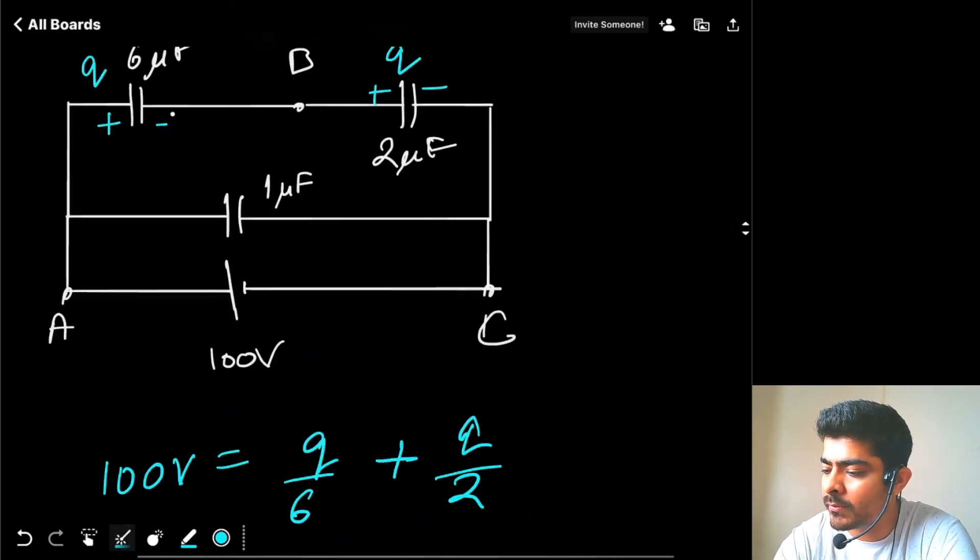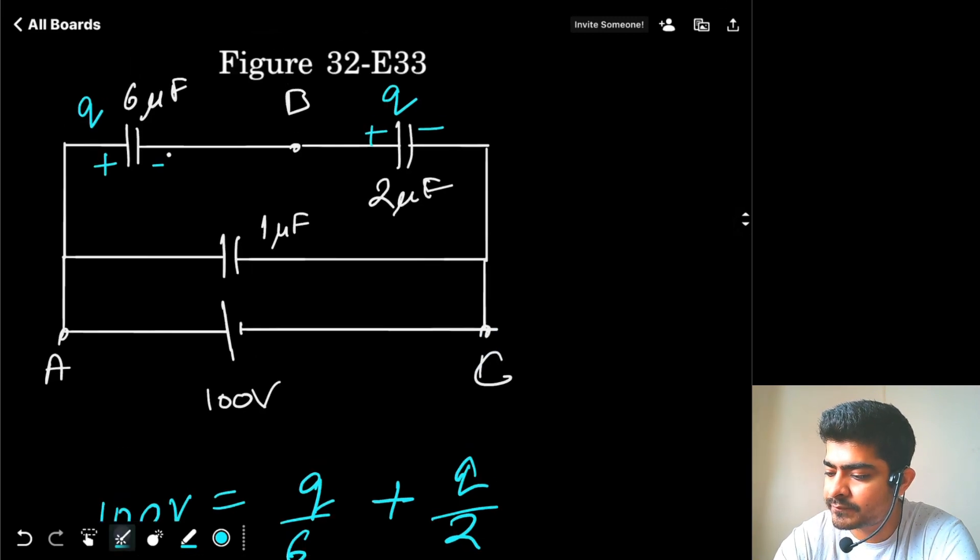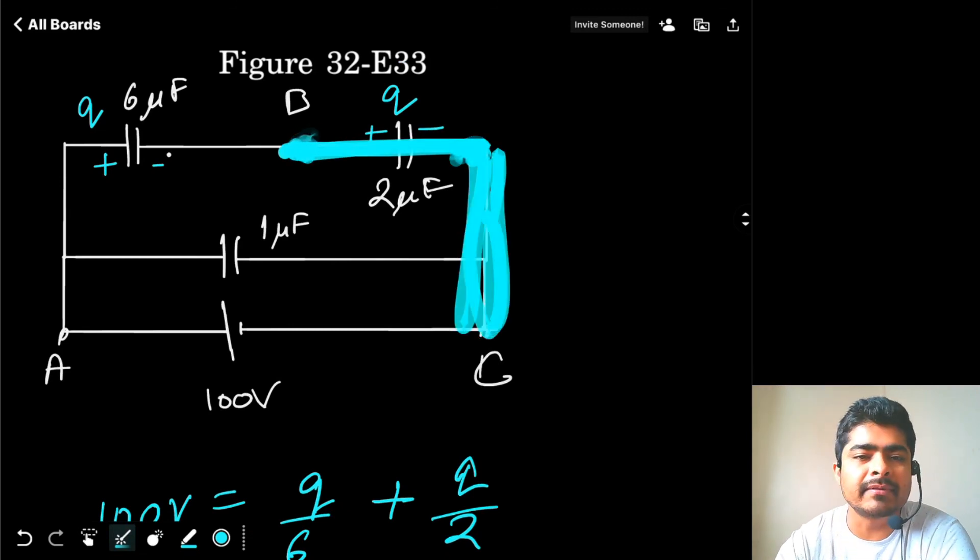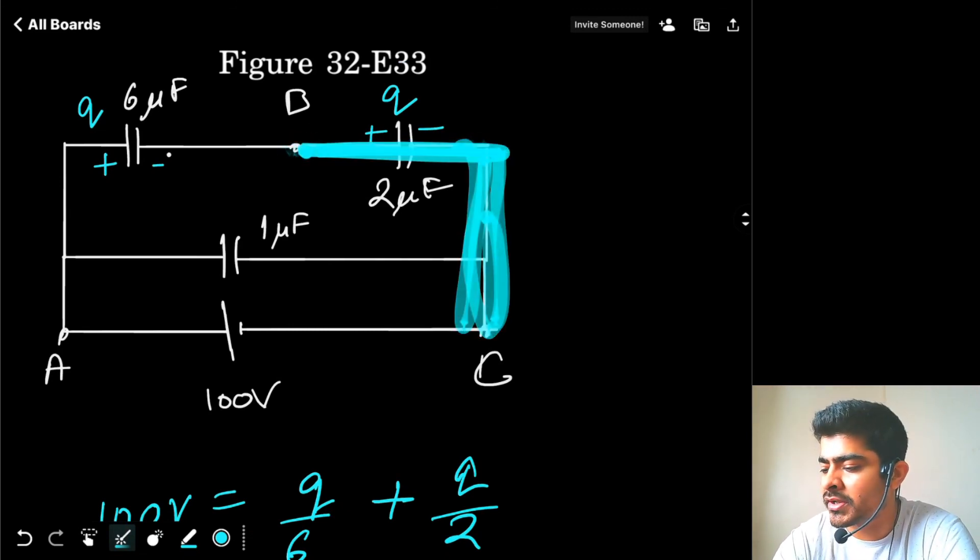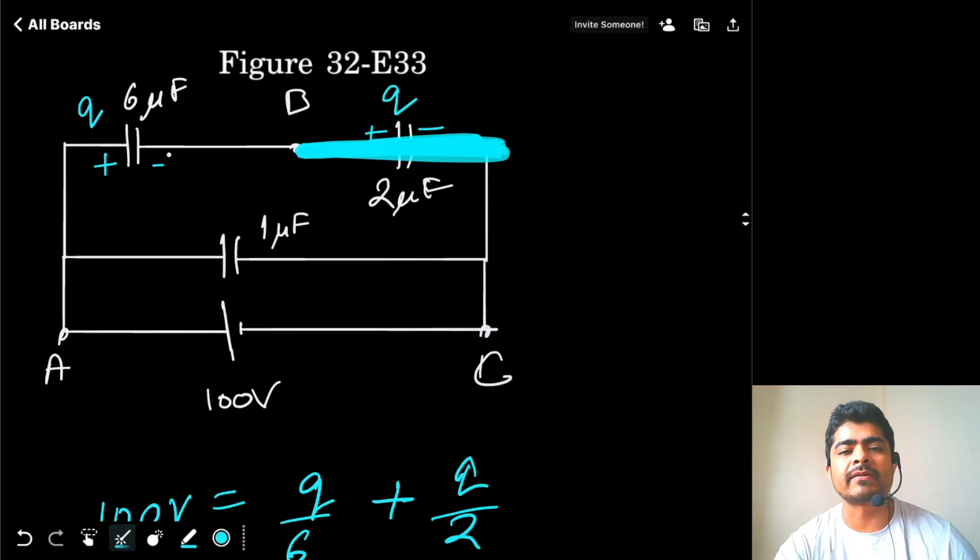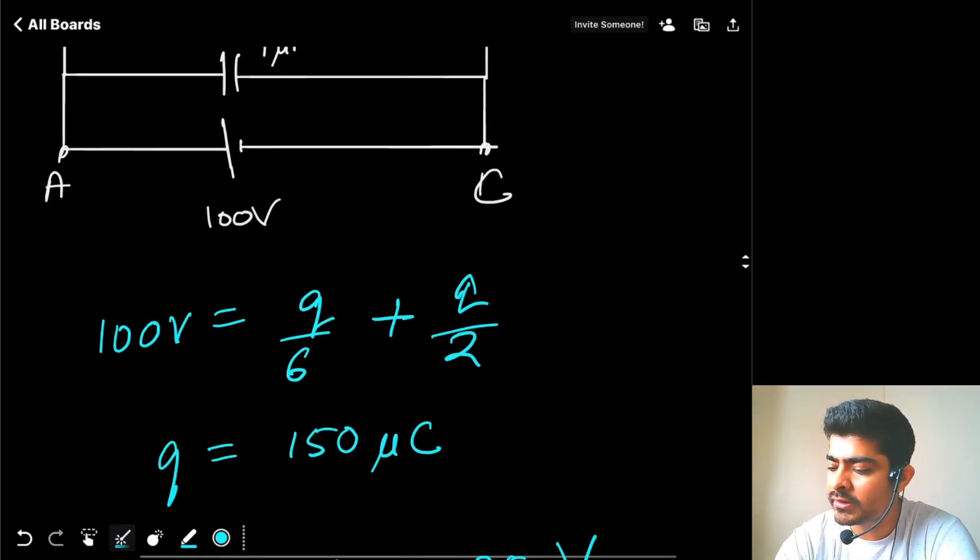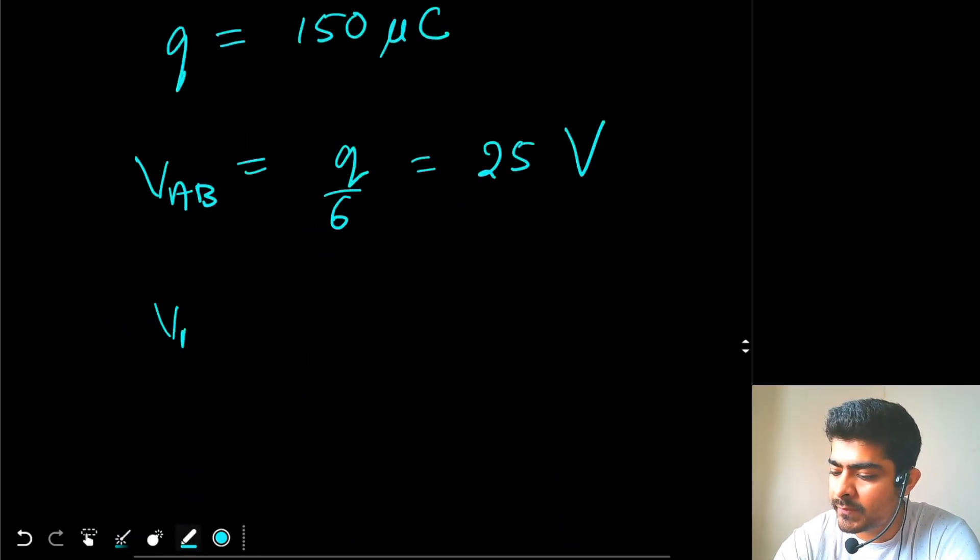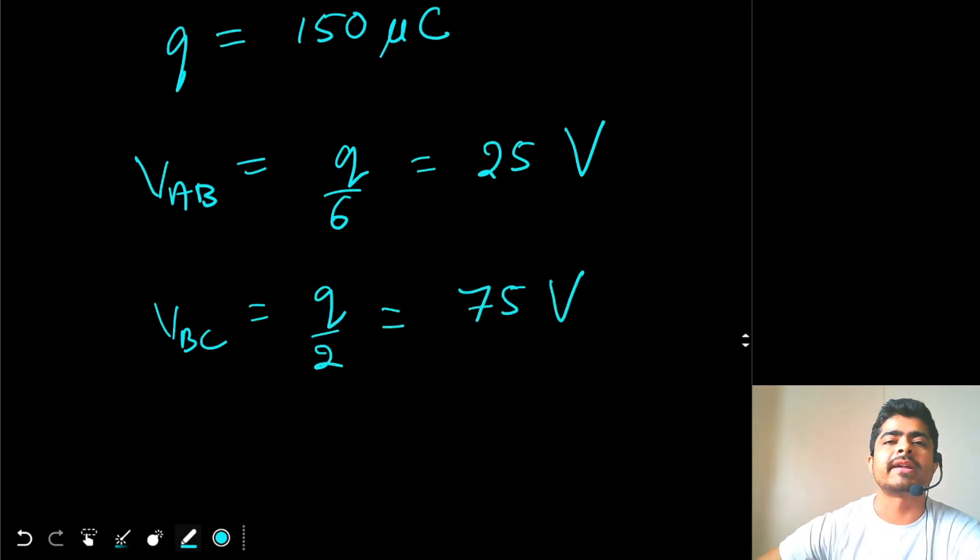Similarly, when we talk about B and C, between B and C potential difference will be equal to between these two points. This is same potential line. So potential difference here will be potential difference between B and C, that is q by 2. So V B C will be q by 2. Since q is 150 we get 75V. That's it.